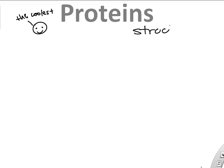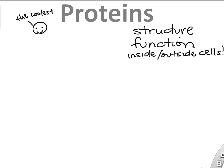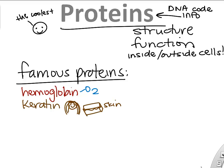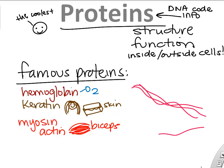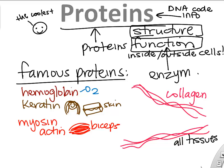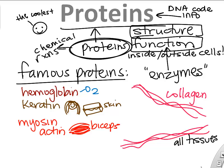Proteins are the structure and functional molecules of our body. When you think structure and function — inside and outside the cells — think proteins. The DNA code has information so your cells know how to build their proteins. Famous proteins include hemoglobin to carry oxygen, keratin to give your skin strength including your hair, actin and myosin in your muscles that allow contraction, and collagen found in basically all connective tissues. Enzymes are proteins that do a function — they help chemical reactions, build other proteins, or break proteins down.